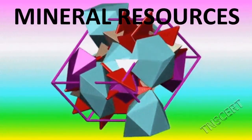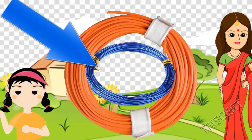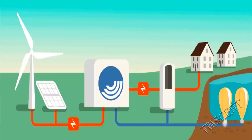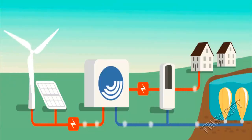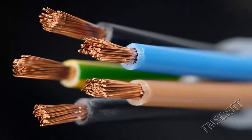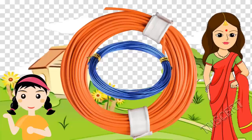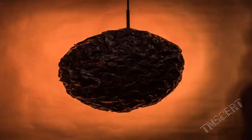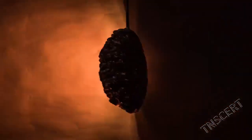What is this, Mom? That is a wire. We are using it to give electrical connections in our house. This is a blue thick wire, and there are many thin metal wires inside it. The thin metal wires are made up of copper. Copper is one of the most used minerals in today's world.